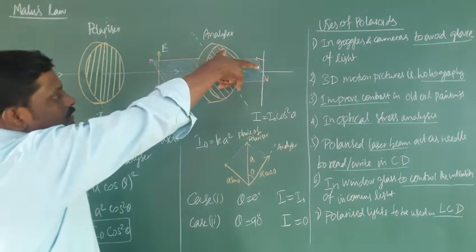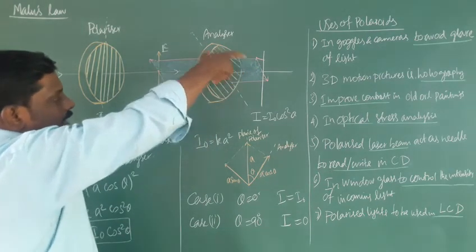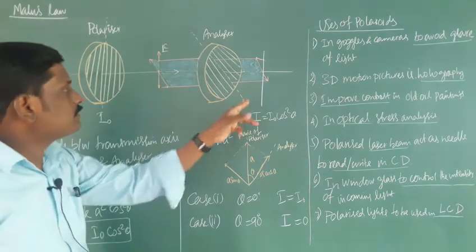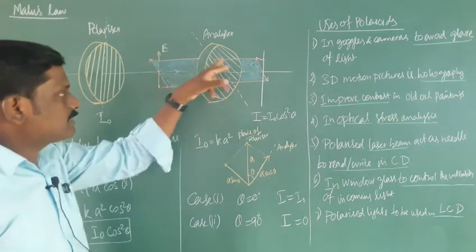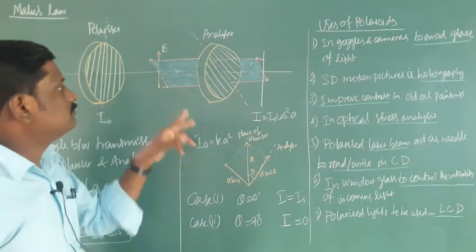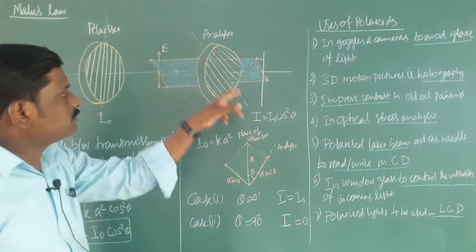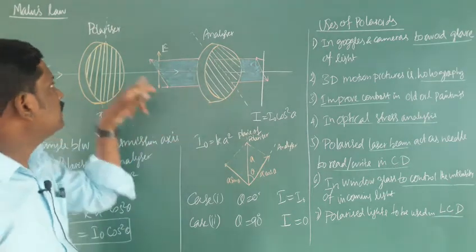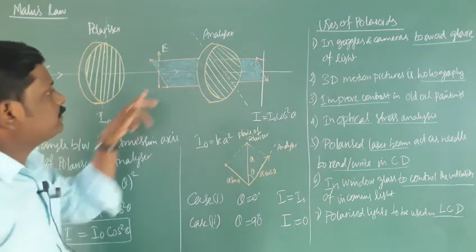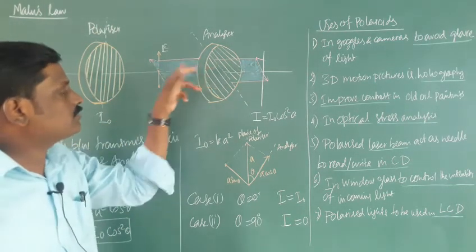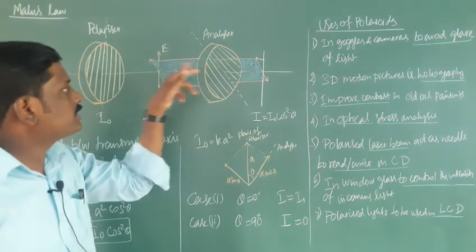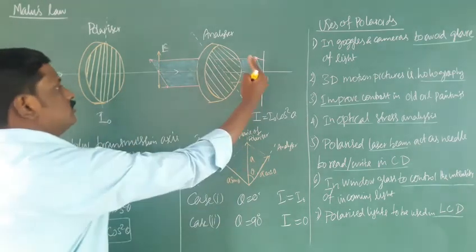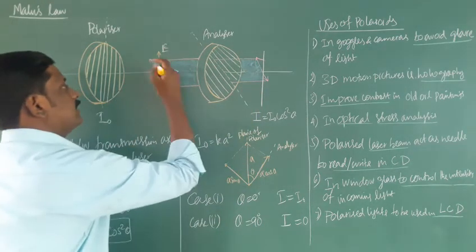Now the analyzer is rotated to a certain angle. We will get some light, but the transmission axis of the analyzer and the transmission axis of the polarizer make an angle theta. The electric field vector E makes an angle theta.